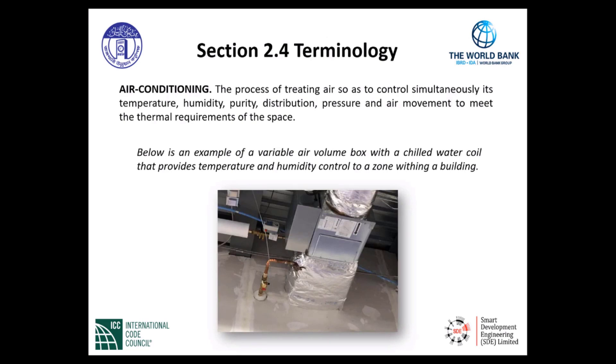The term air conditioning has a very specific meaning. Air conditioning is the process of treating air so as to control simultaneously its temperature, humidity, purity, distribution, pressure, and air movement to meet the thermal requirements of the space. Below is an example of a variable air volume box with a chilled water coil that provides temperature and humidity control to a zone within a building. It also provides distribution, pressure, and air movement to condition the space, along with filtration upstream to guarantee the purity of the air.